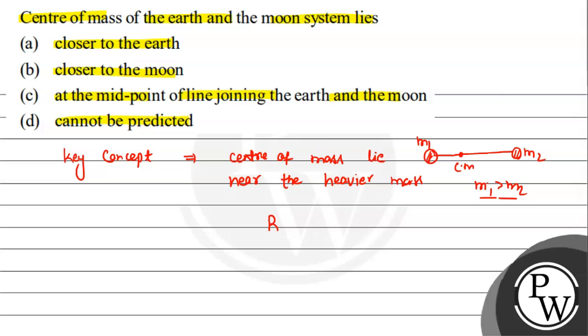This is the formula: Rcm equals m1 r1 plus m2 r2 upon m1 plus m2. This is the formula for center of mass, which is a position vector.